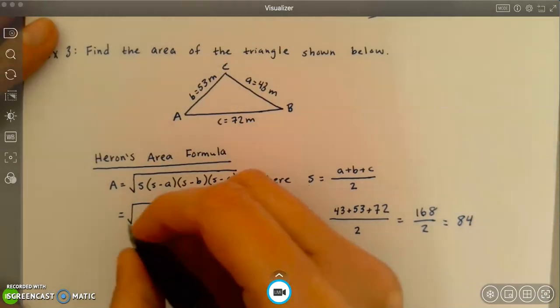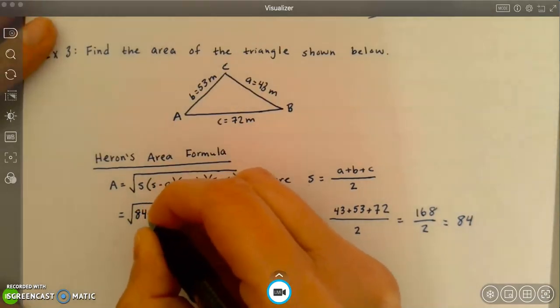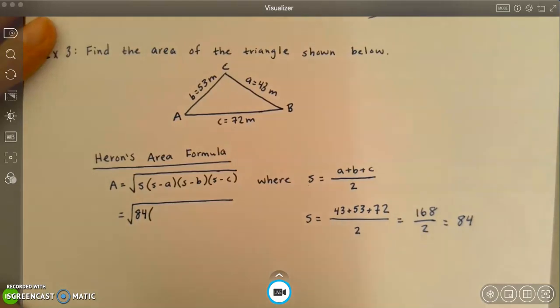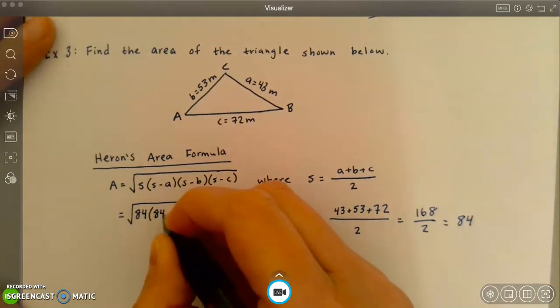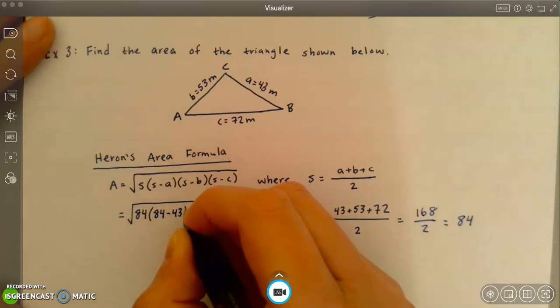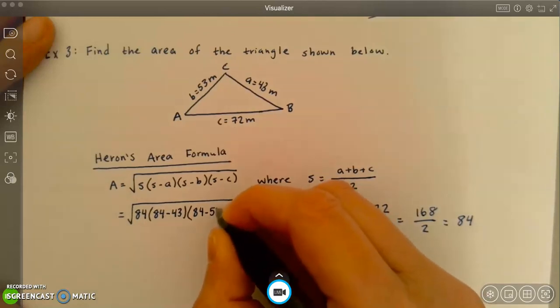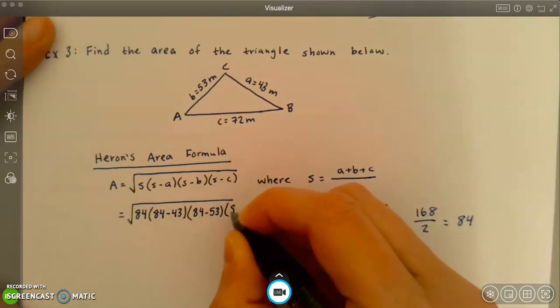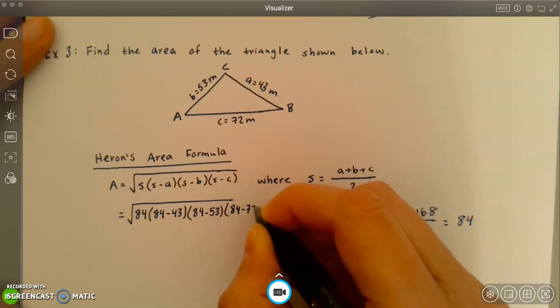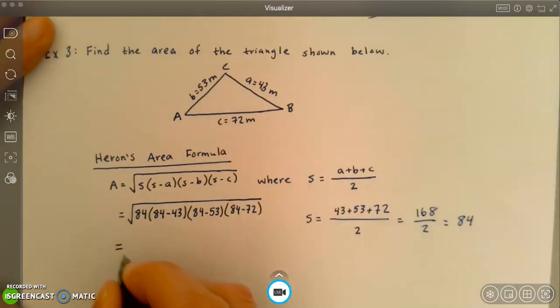So s is the value of 84, so I'm going to go ahead and plug that in. Next, I'm going to have 84 minus a, and a is 43. I'm going to have 84 minus side b, which is 53. And then 84 minus side c, which is 72. And remember, that is all under the square root.